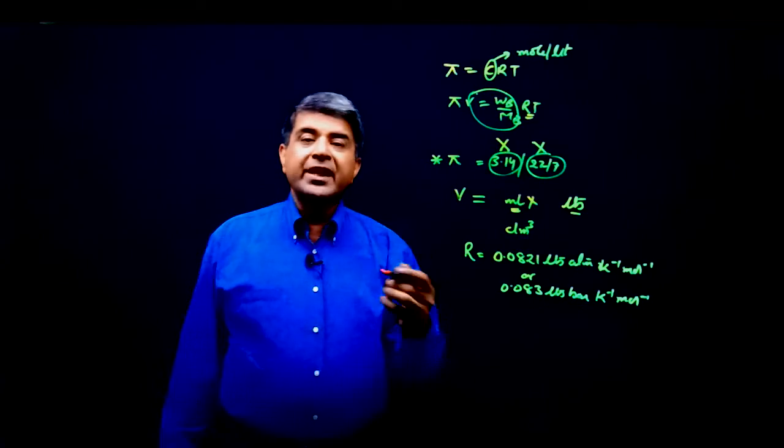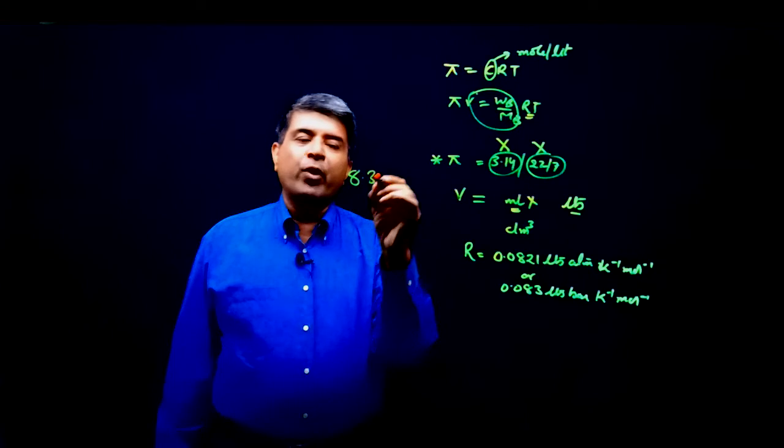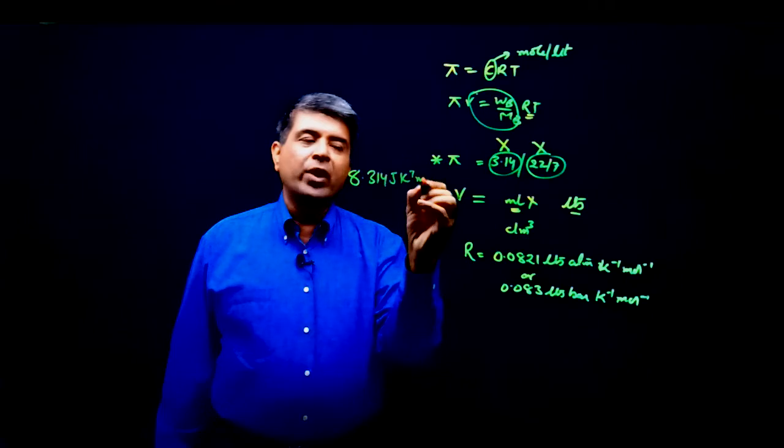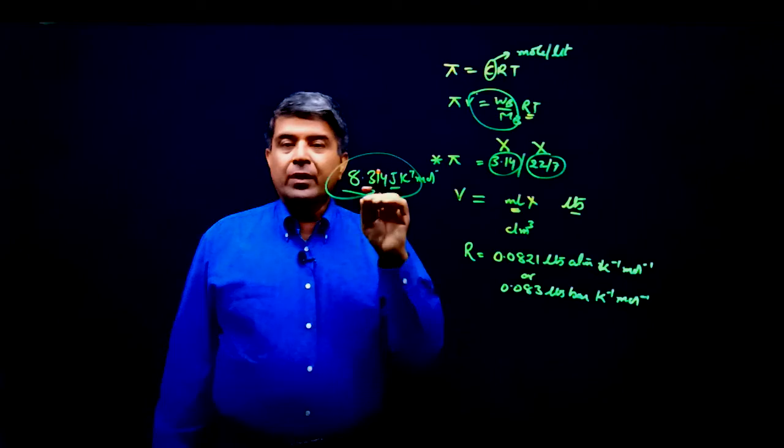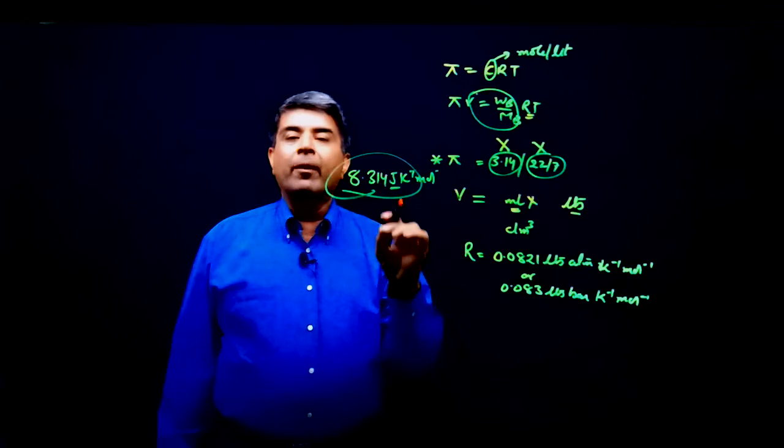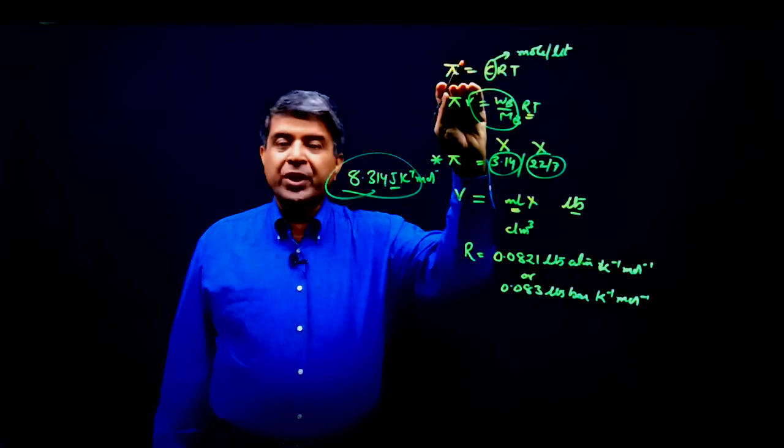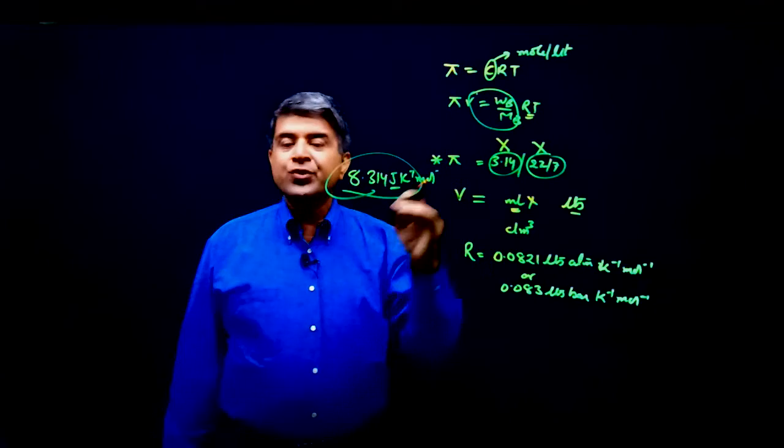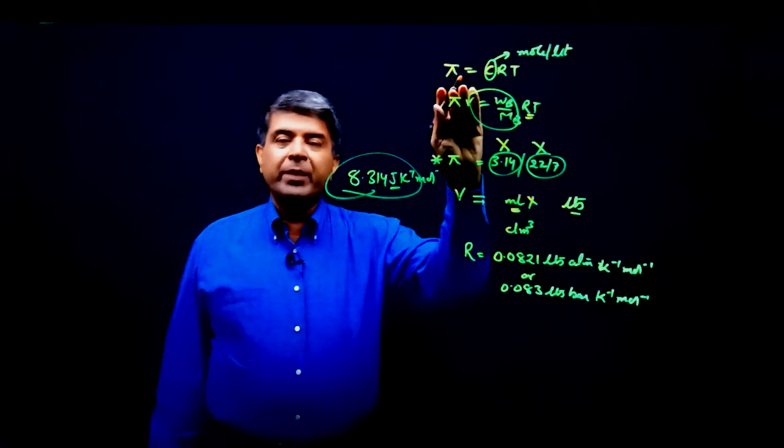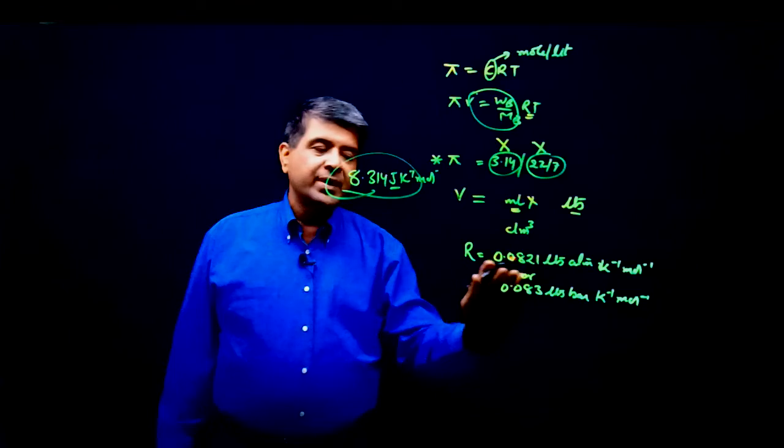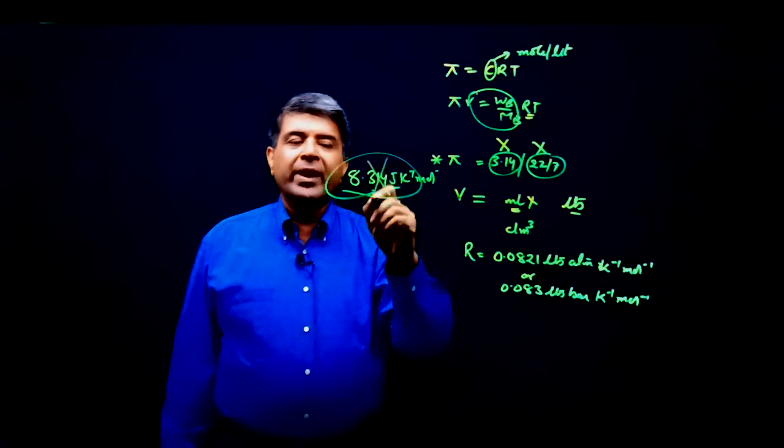I have seen over the years that students usually take value as 8.314 joules Kelvin inverse mol inverse. Now it can't be this value because joules is a unit for energy and we are calculating pressure which is not associated with energy. So in calculating osmotic pressure, we have to use either this value or this value. This 8.314 cannot be used.